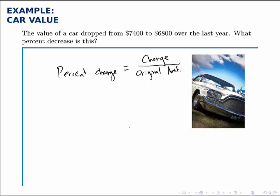So all we need to do is find out how much the price changed from the first year to the second year, and then divide that by the original amount, which is going to be the $7,400, the amount before it changed.